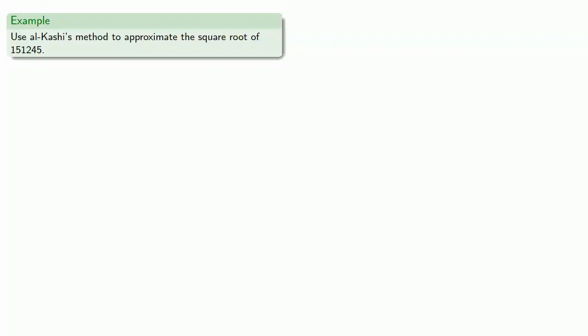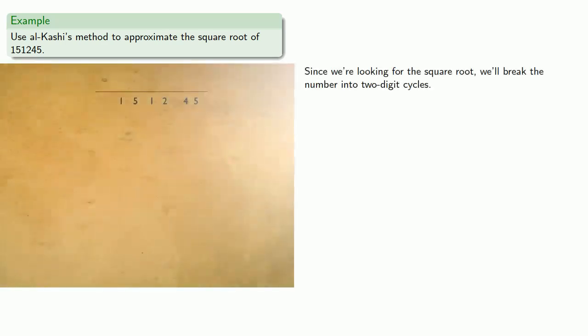Let's do another example of Al-Kashi's method of square roots and see why it works. Let's try to approximate the square root of 151,245. Since we're looking for square roots, we'll break the number into two-digit cycles.